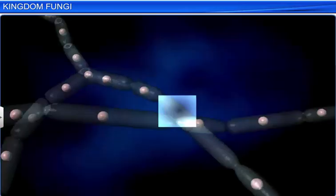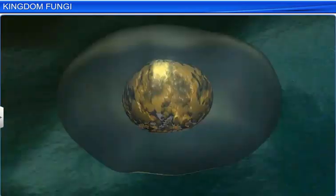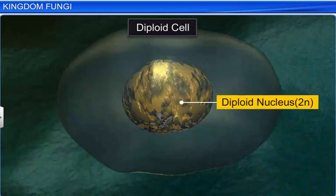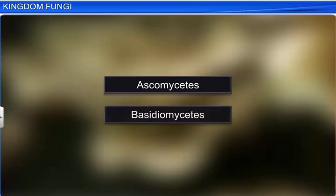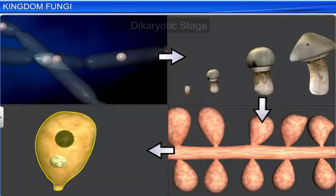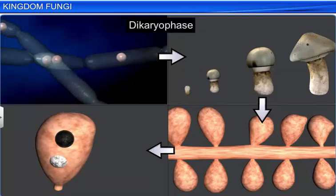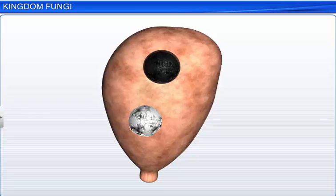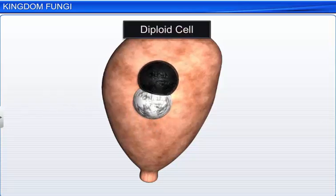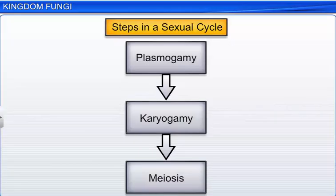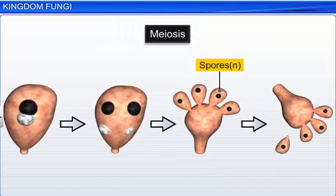Whereas in some fungi the fusion of two haploid cells immediately results in the formation of diploid cells, or 2N, in other fungi, like ascomycetes and basidiomycetes, an intervening dikaryotic stage occurs. This condition of two nuclei per cell is called dikaryon, and the phase is called the dikaryotic phase. Later, the parental nuclei fuse to make a diploid cell. The third stage involves reduction division — that is, meiosis — to form haploid spores. Meiosis occurs in the fruiting bodies of fungi.